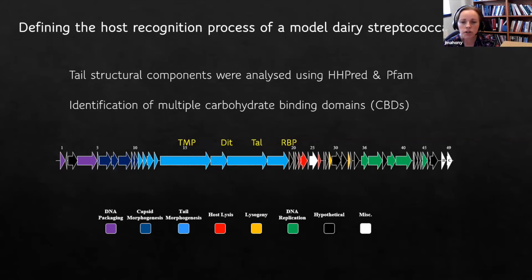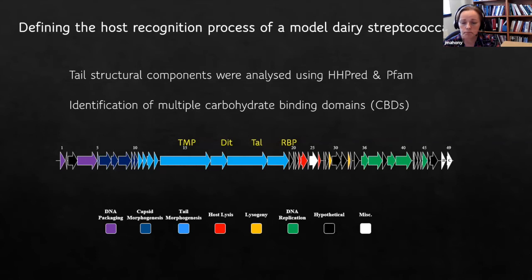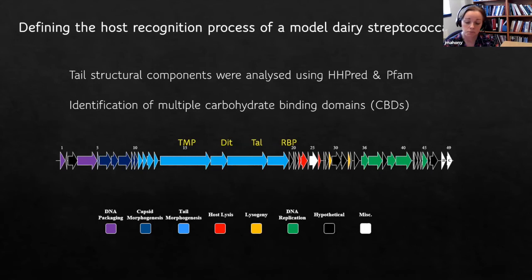In this lamdoid genome architecture, the typical players are the tail tape measure protein (TMP), the distal tail protein (DIT), tail-associated lysin (TAL), and then downstream another gene which for the last decade we thought was just an accessory function. As it turns out through this analysis, it may actually be the bona fide RBP. Re-analyzing functional annotations from 10 years ago to now changes things massively — we can finally put assignments on those functions for this old pet phage in our lab.